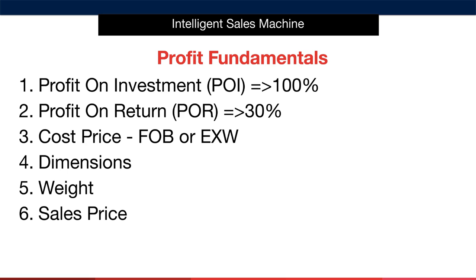The second way we'll express profitability is POR, or profit on return — the profit made on every item sold, expressed as a percentage of the sales price. We want this figure to be 30% or more. In simple terms, if an item sells for twenty dollars, a POR of 30% gives us a net profit of six dollars. This allows us to quickly calculate profit on a volume of sales — for instance, a 30% POR on thirty thousand dollars revenue gives us nine thousand dollars net profit.